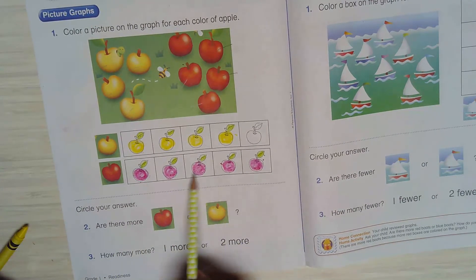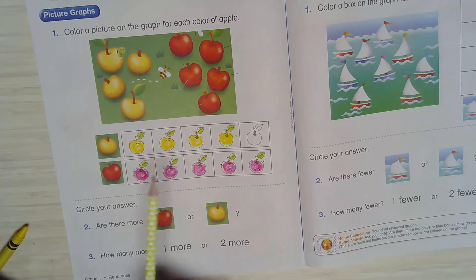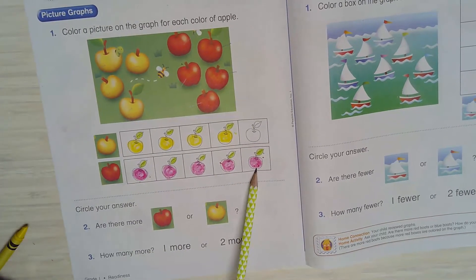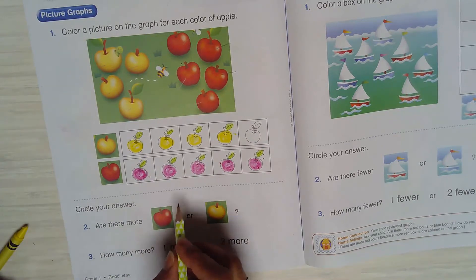Now circle your answer - are there more red or yellow apple? We have more red or more yellow apples. See, when you have graph and colored, it's easy. You don't even need to count. I look and I colored more red, so there are more red apples, right? It's gonna circle the red apple.